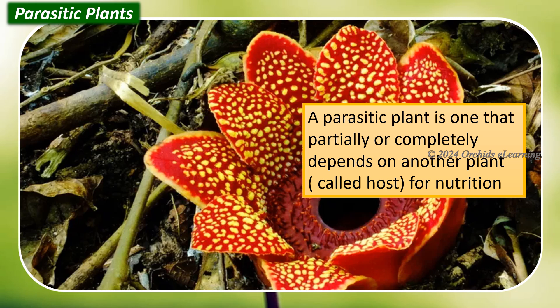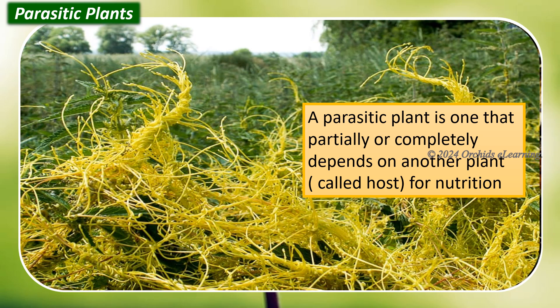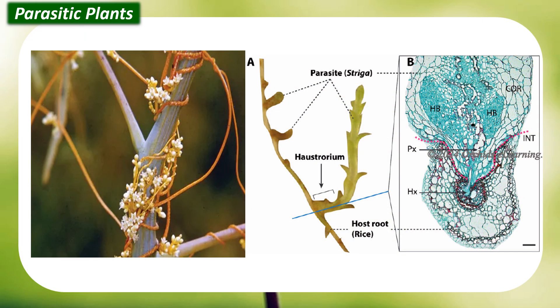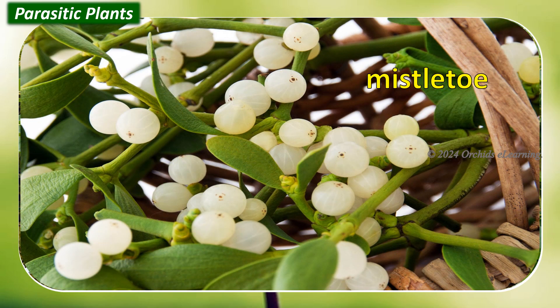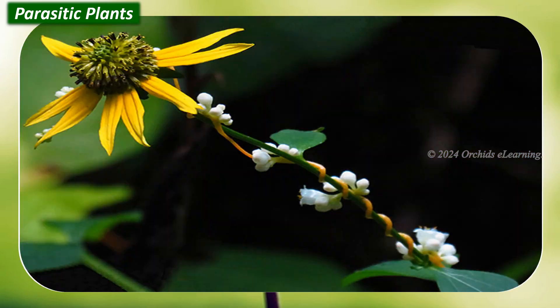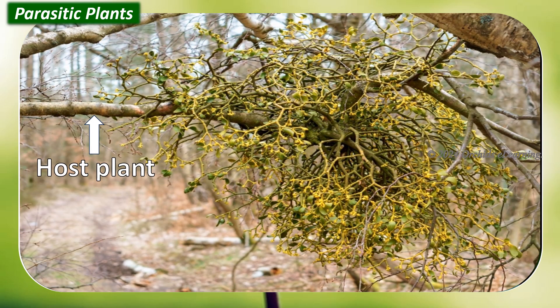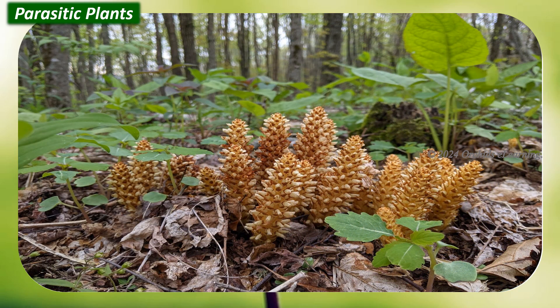A parasitic plant is one that partially or completely depends on another plant called the host for nutrition. Parasitic plants develop special roots which penetrate the tissues of the host plant, and the prepared food is generally absorbed from the root or stem of the host. Examples include cuscuta (dodder) and mistletoe. In parasitic relationships, only the parasitic plant benefits; it harms the host by slowing its growth and sometimes causing heavy damage, though it rarely kills the host.